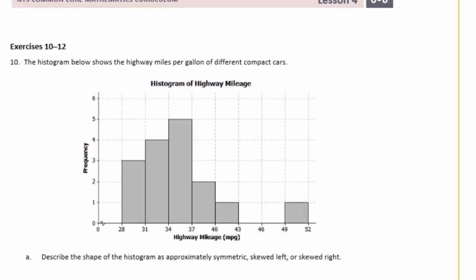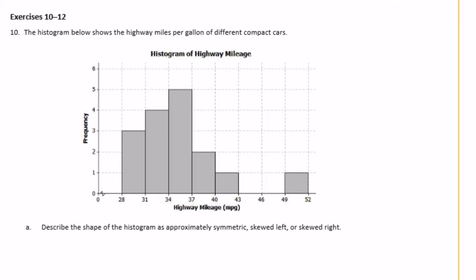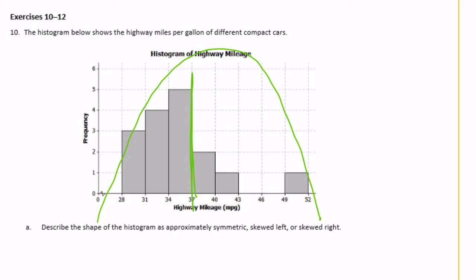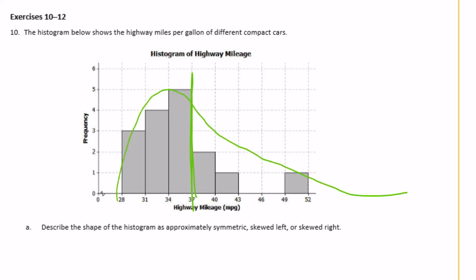Exercise 10: the histogram shows highway miles per gallon of different compact cars. Part A — describe the shape as approximately symmetric, skewed left, or skewed right. This is not symmetric because a symmetric histogram would have more values spread evenly on both sides. It's going to be skewed right, because toward the larger values on the right side is where the data tapers down.